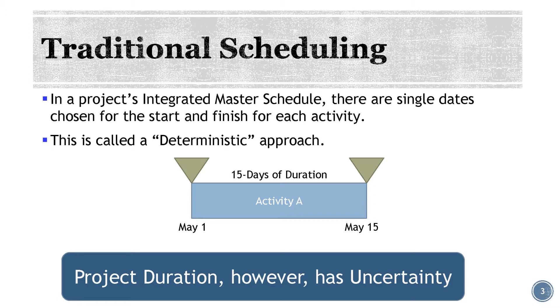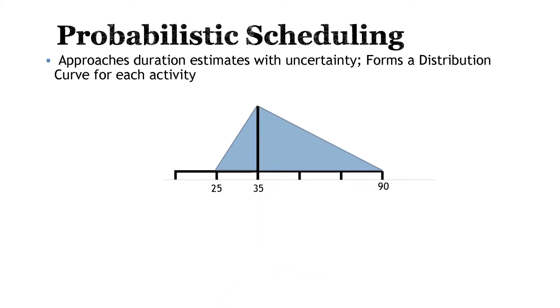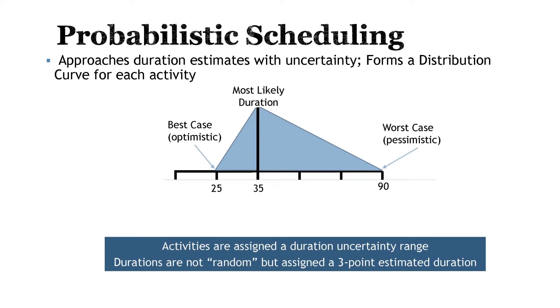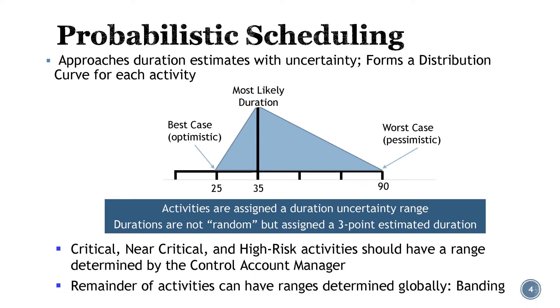However, in reality, project duration has a degree of uncertainty. Probabilistic scheduling introduces the application of a date range. This process approaches duration estimates with a degree of uncertainty, and forms a distribution curve for each activity based on the evaluated best, worst, and most likely duration estimates.